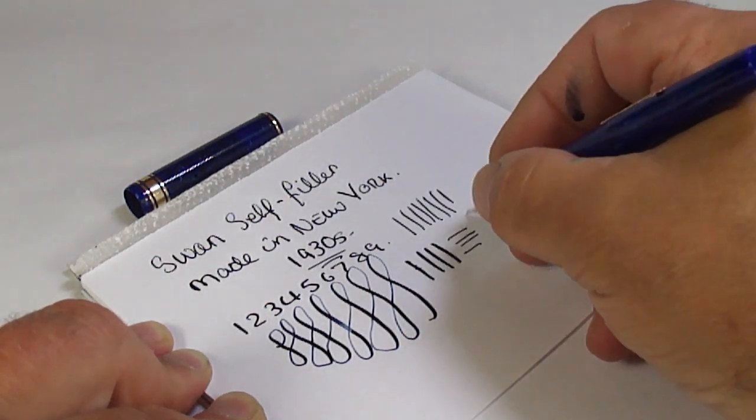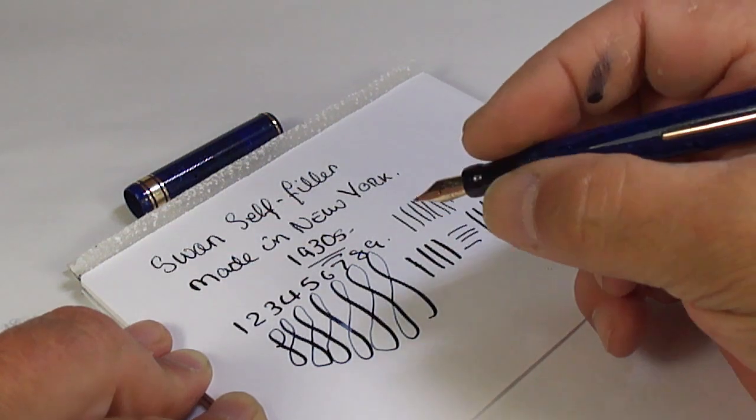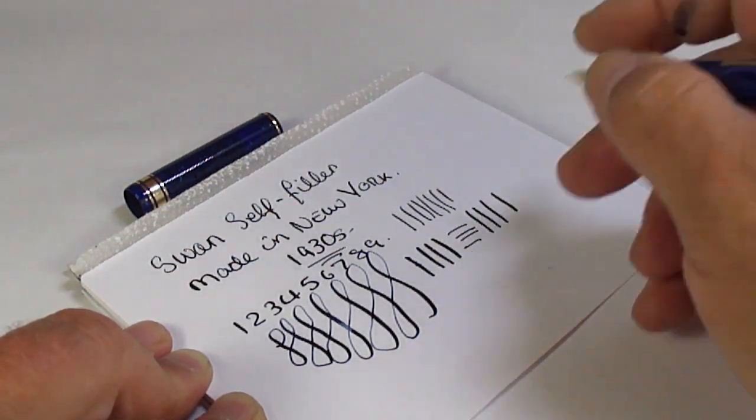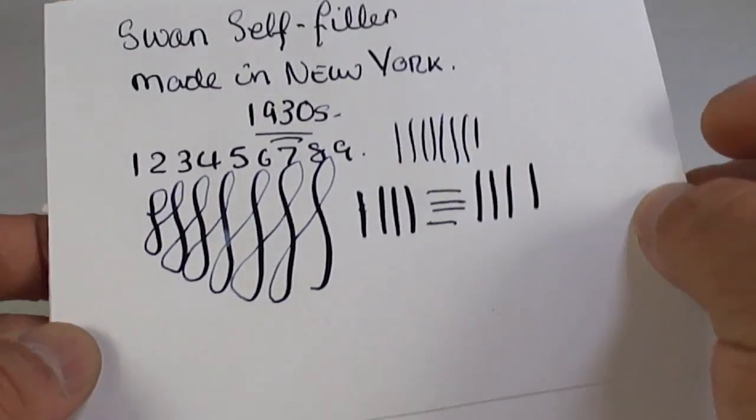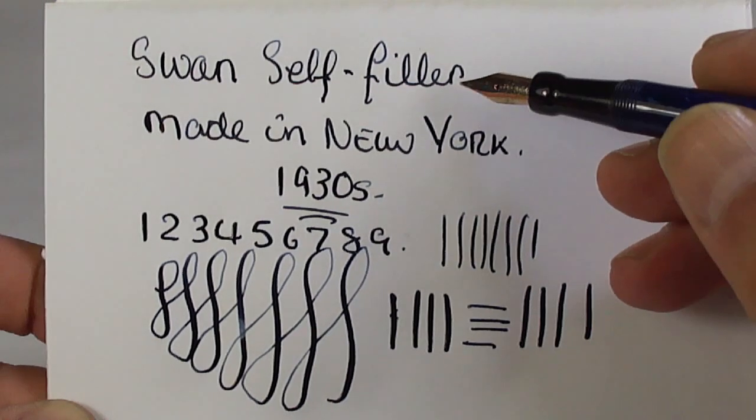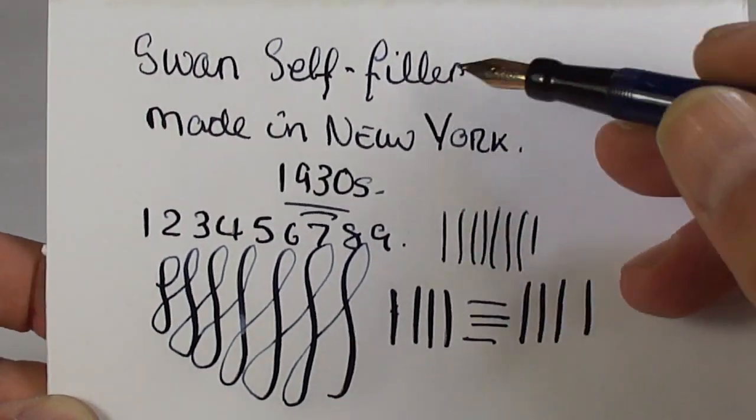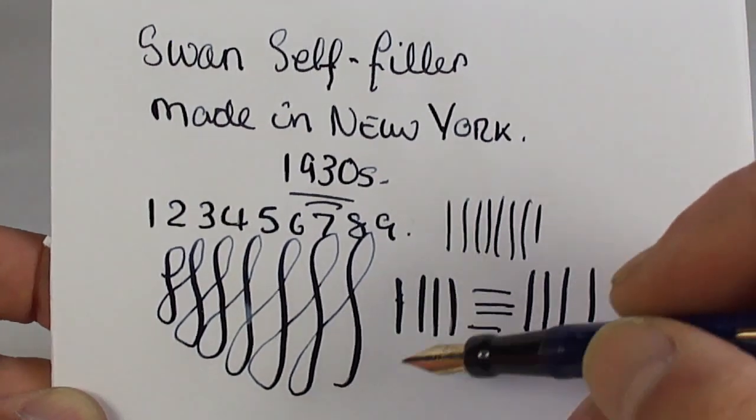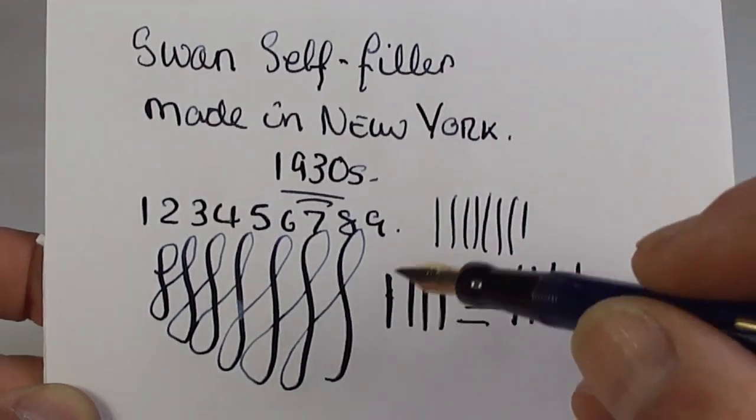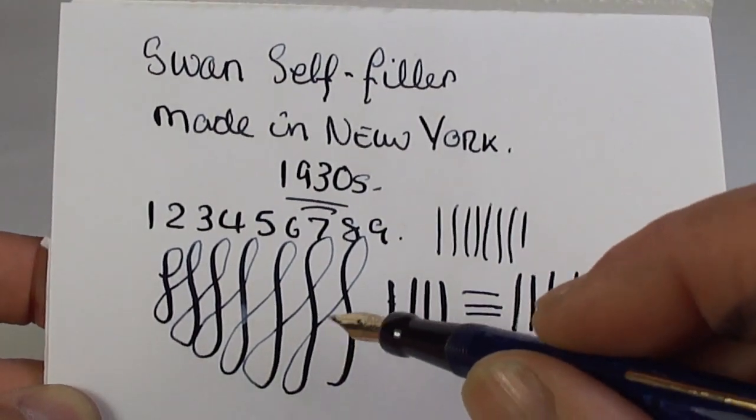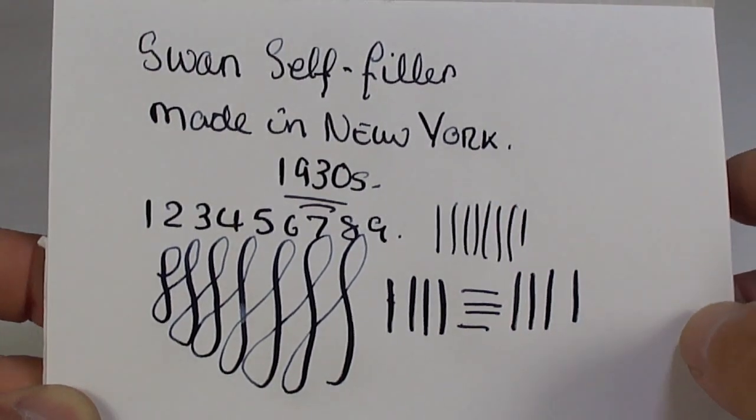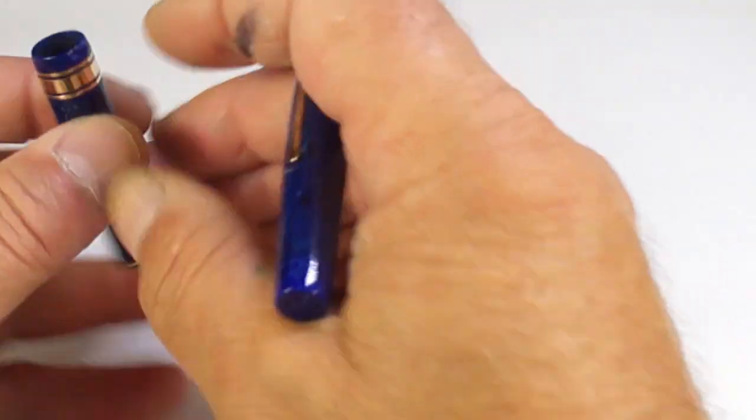There we go, you can see typical of these pens of this period, we've got a flex nib. So as I say, writing with maybe from a fine to medium through to a broad line. A flex nib, so we're getting a lovely variation in the line, but writing very nicely indeed.